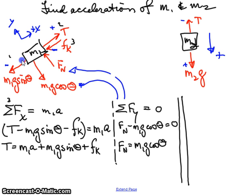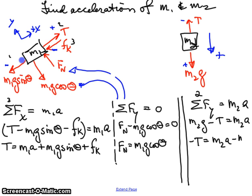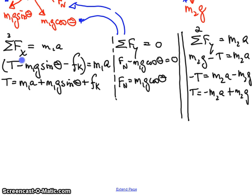Let's look at the equation for mass 2. Sum of the forces in the y direction is going to equal M2a. There are only two. Down is positive. So, I have M2g minus T equals M2a. And, I'll solve for the tension there as well. I get minus T equals M2a minus M2g. And, therefore, plus T equals minus M2a plus M2g.